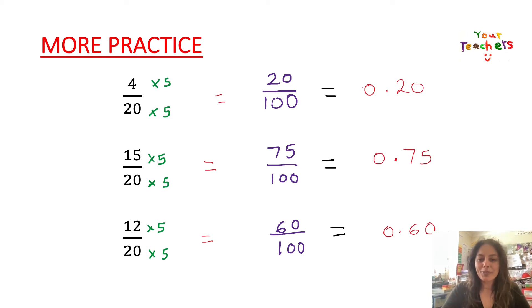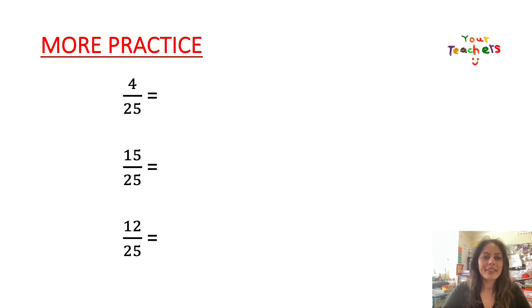Let's do some more. I have now got here 4 over 25, 15 over 25 and 12 over 25. Do not fear if you don't think you know how to convert these to a baseline 10 number. Remember, 25 times 4 gives us 100. Okay, so if you think you can do this, have a bash now. Press pause and have a go.